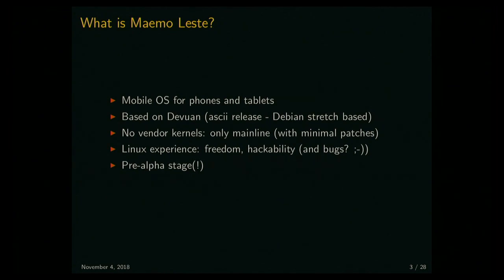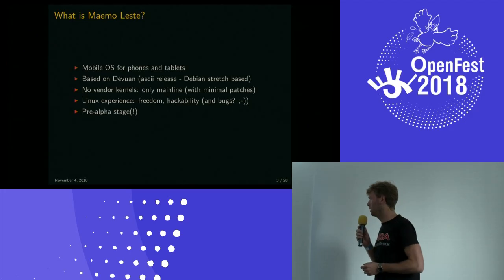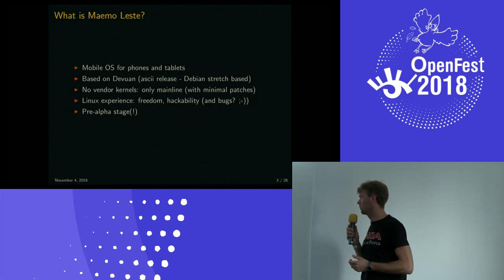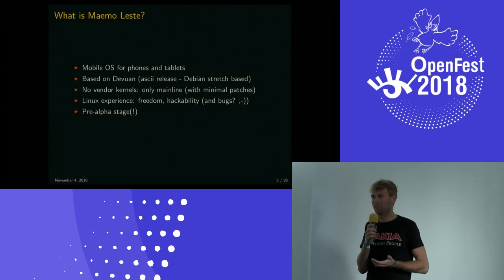Our project is called Maemo Leste, as the title of the presentation. It's a mobile OS for phones and tablets. It's based on Devuan, which is based on Debian — basically Debian without systemd. We are using the latest stable release from Devuan, so you have all the packages from Debian that don't directly depend on systemd. We only work with Linux directly from Linux Torvalds, so there are no old vendor kernels from Android that are poorly supported or have serious security bugs. For a few devices we have some extra patches, for example to make 3D acceleration work.